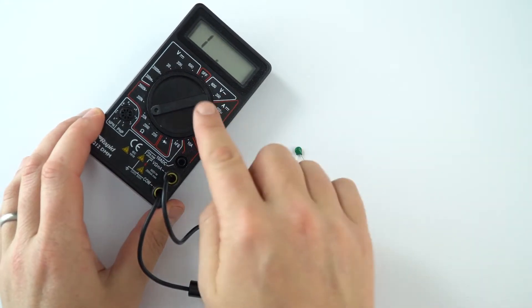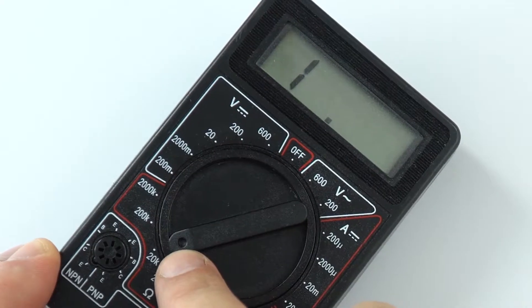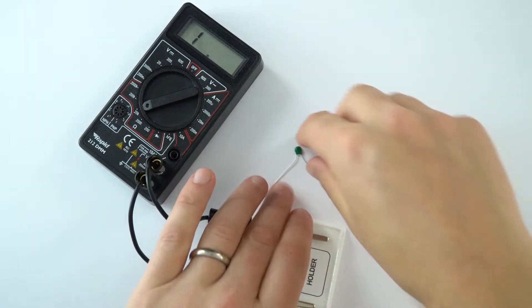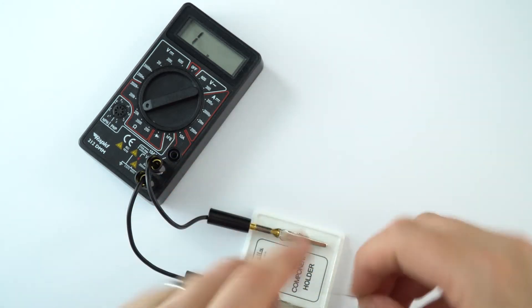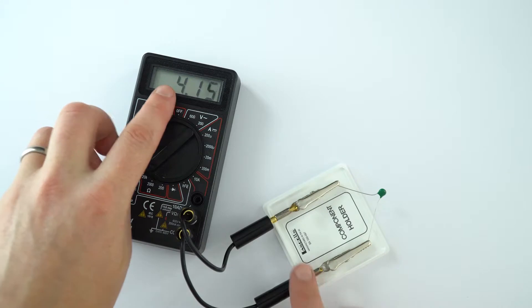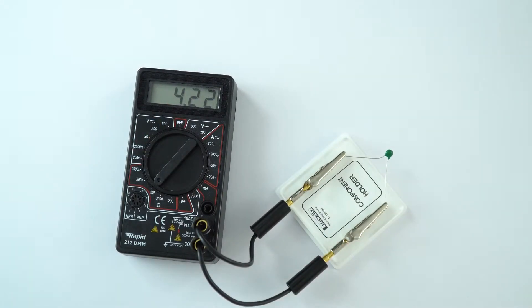Now just to show that, I've got a multimeter here and I've set it up to act as an ohmmeter, so it's going to measure the resistance in ohms. I've got a component holder here, and if I just connect this into that, we can then see the reading on the ohmmeter, so it's about 425.